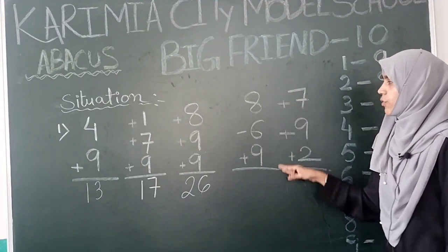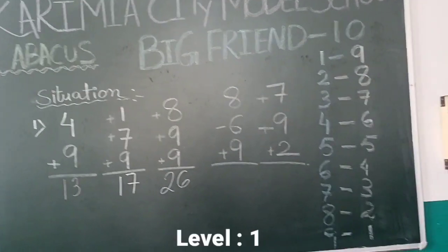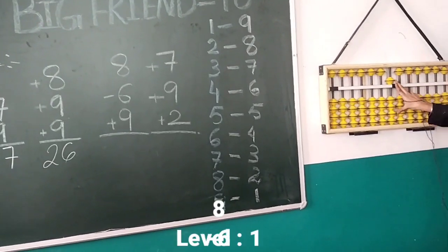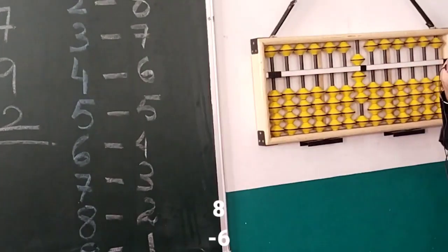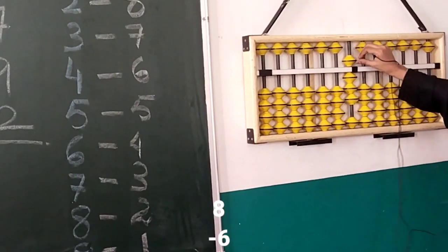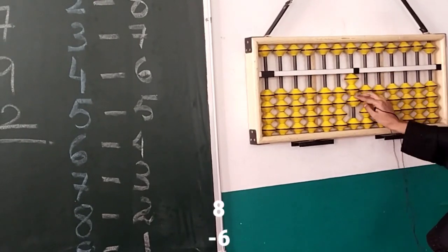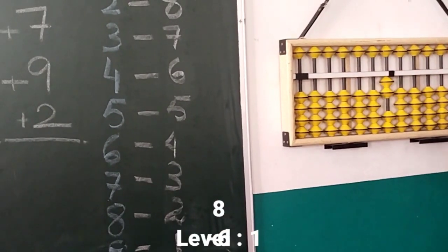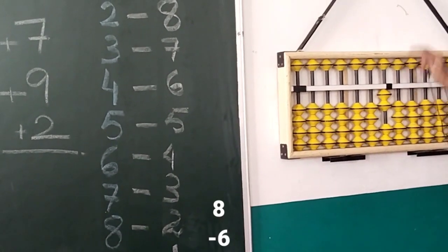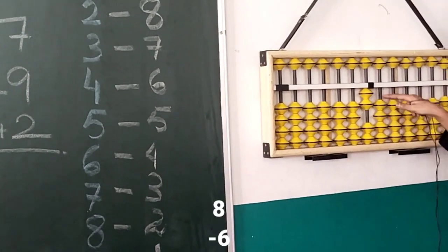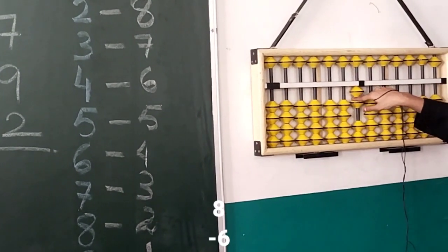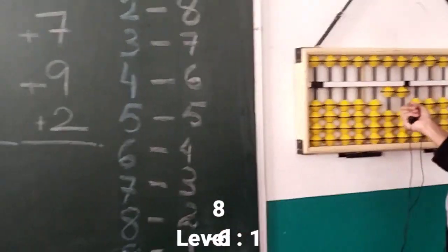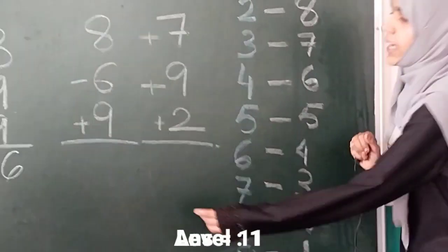Our fourth situation is eight minus six plus nine. We do eight with pinch, and for minus six we open a pinch. For nine, again we take help from Big Friend because we don't have enough beads. One will go and Big Friend will come and help. Our answer is eleven.